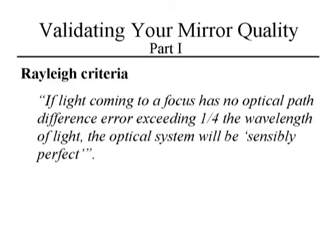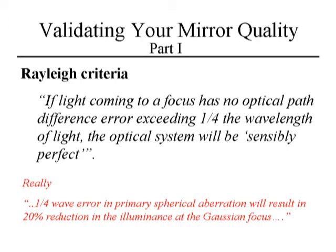The Rayleigh criteria states: if light coming to a focus has no optical path difference error exceeding a quarter of the wavelength of light, the optical system will be sensibly perfect. Closer to Rayleigh's actual words, a quarter wave of primary spherical aberration results in a 20 percent reduction in luminance at the Gaussian focus — so at a quarter wave you're just at the threshold of beginning to notice deterioration. That still makes it a good criterion, but let's be clear about what it says.